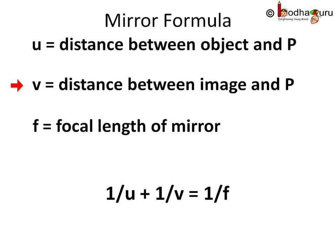And f is the focal length of the mirror. So the formula is 1/u + 1/v = 1/f. But remember one thing: in this formula, in case of spherical mirrors, all distances are measured from the pole.